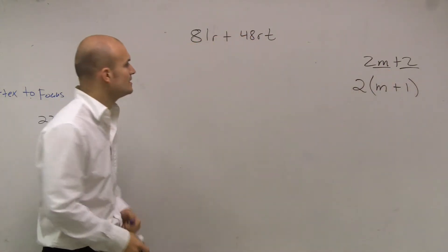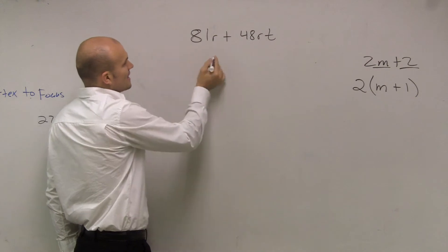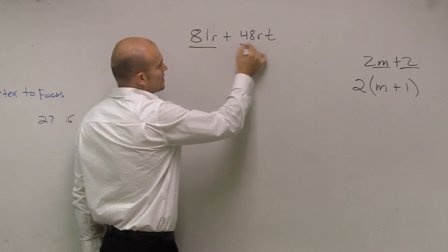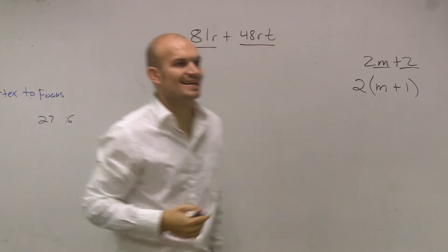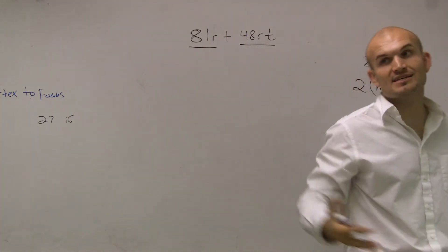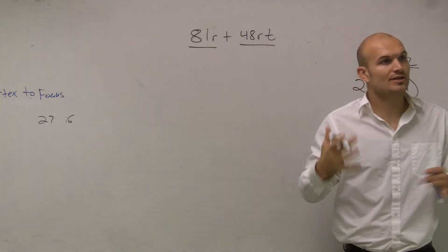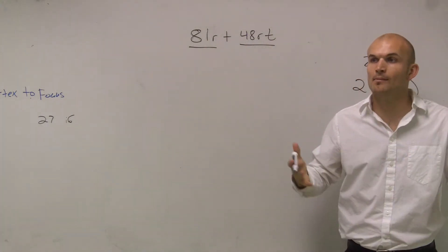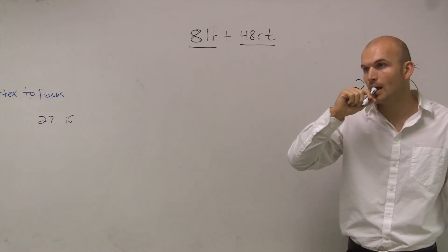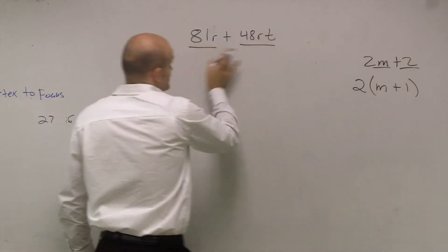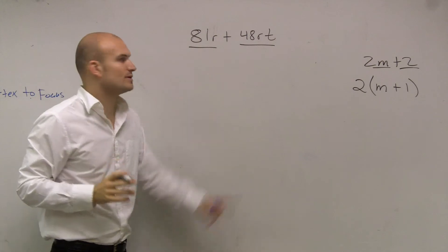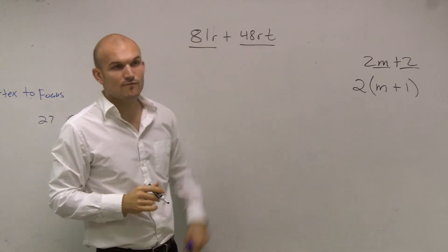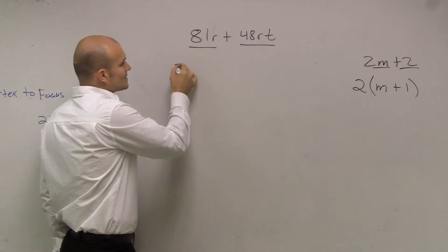So what I'm going to do here is look at this and say, what do this term and this term share that I can divide out? Because if I can divide out the same number, I can rewrite it as a multiplication problem of the two factors. You look at this and you notice they actually both share 3. 81 divides into 3 and 48 divides by 3. So I can factor out a 3.